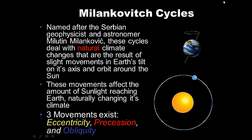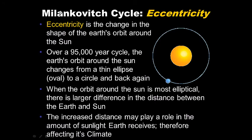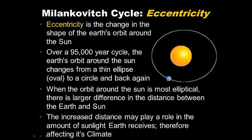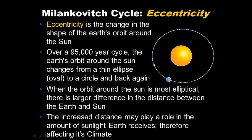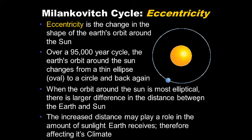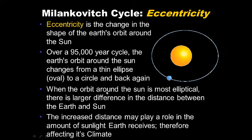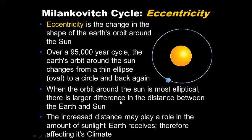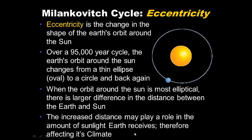Eccentricity is the change in the shape of Earth's orbit around the sun. Over a 95,000-year cycle, the orbit changes from a more oval shape to a more circular shape — like going from a football shape to a circular shape. When the orbit is most elliptical — most football-shaped — there is a large difference in the distance between Earth and sun, and this naturally changes the climate. Farther away from the sun it gets colder, so this increased distance affects the amount of sunlight Earth receives.